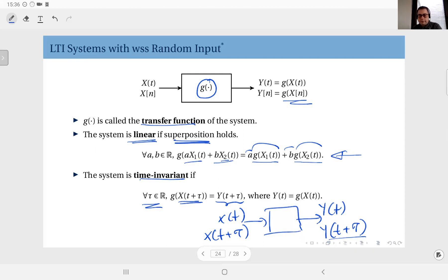Now if a system has both these properties, linear and time invariant, we call such systems linear time invariant, in short LTI systems.